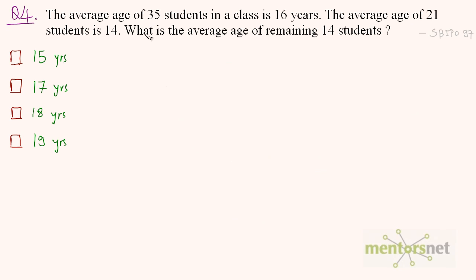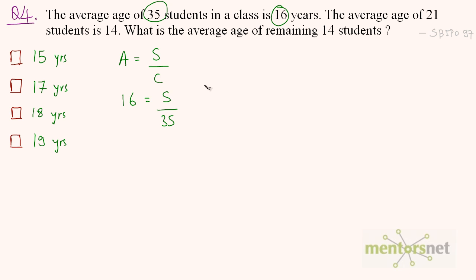The fourth and final question for this video. The average age of 35 students in a class is 16 years and the average age of 21 of those students is 14. What is the average age of the remaining 14 students? We know the total number of students is 35 and the average is 16. Using average equals sum upon count, the total sum of the ages of 35 students is 16 times 35.